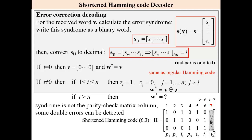Now, decoding. Decoding is the same as the regular Hamming code. The only difference is that if the syndrome in decimal notation is greater than n, then some double errors are detected.